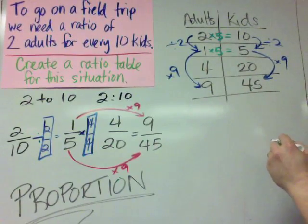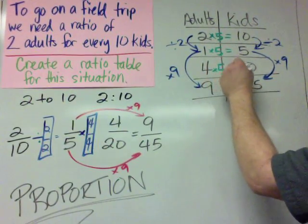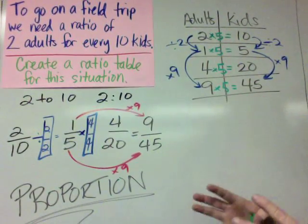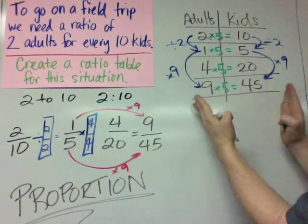2 times 5 equals 10. 1 times 5 equals 5. 4 times 5. 9 times 5. And a horizontal relationship will always show up in a proportional table.